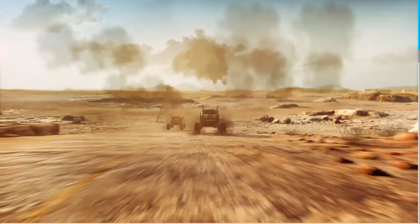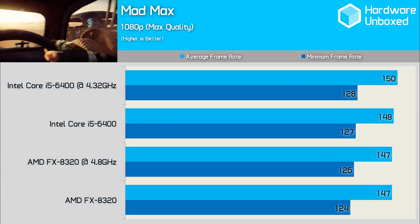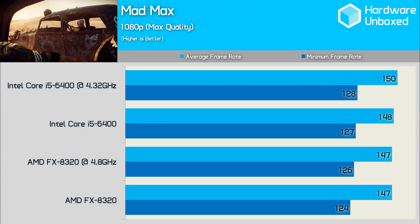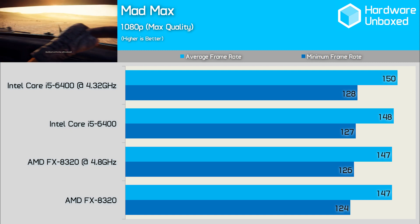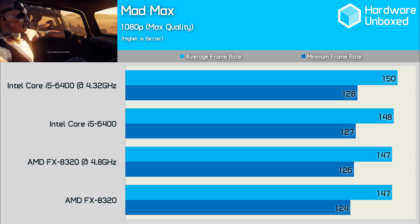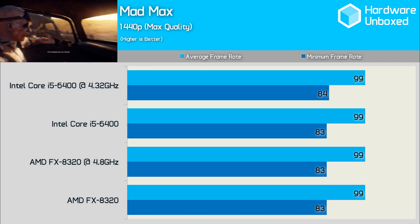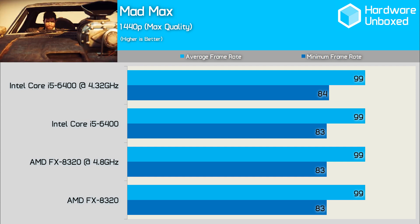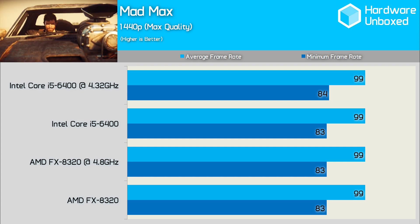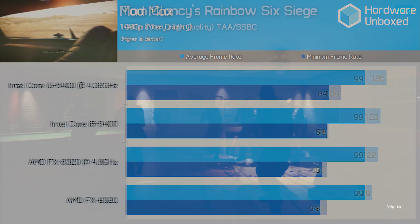Mad Max is a GPU-limited game, and this is why we see the FX8320 and Core i5-6400 providing identical performance at 1080p. Increasing the resolution to 1440p does nothing to change the performance margins, and again we find that the AMD and Intel processors deliver the same performance.